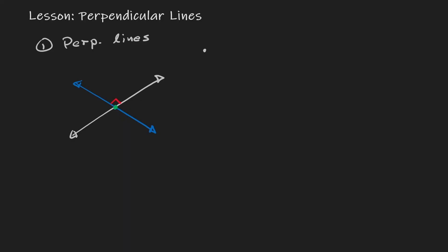So to define them, pretty much perpendicular lines are lines whose intersection creates a right angle.